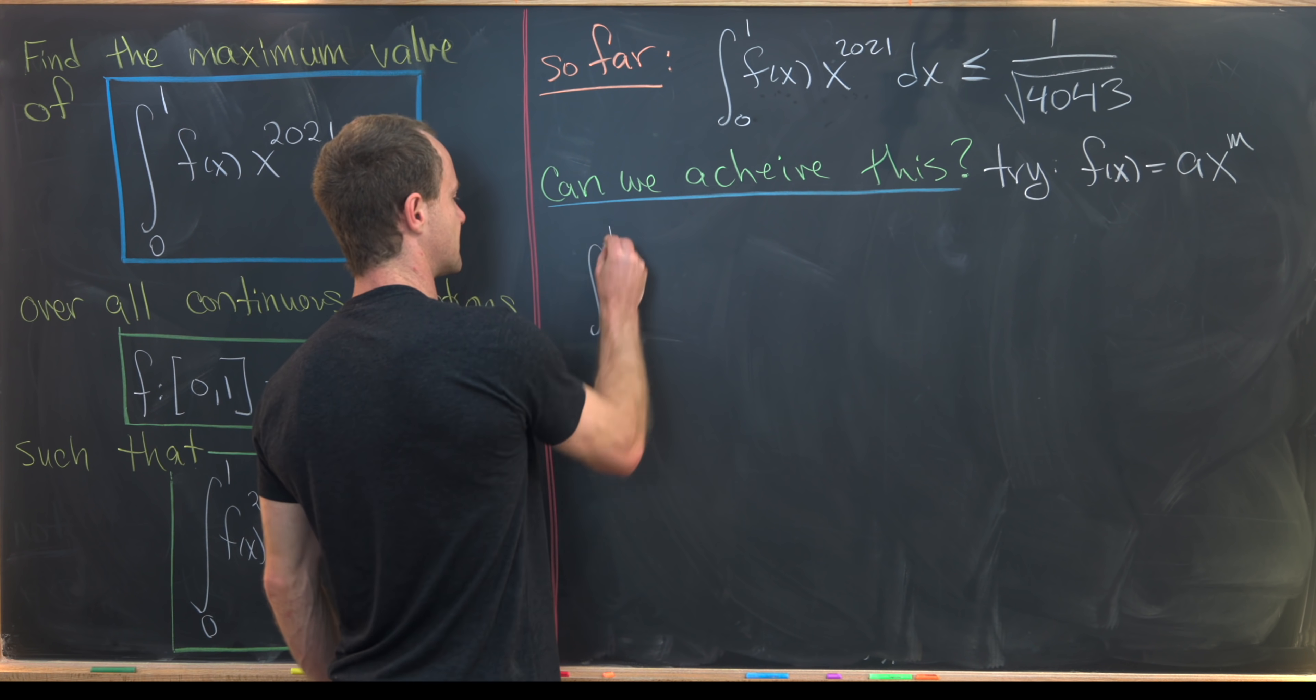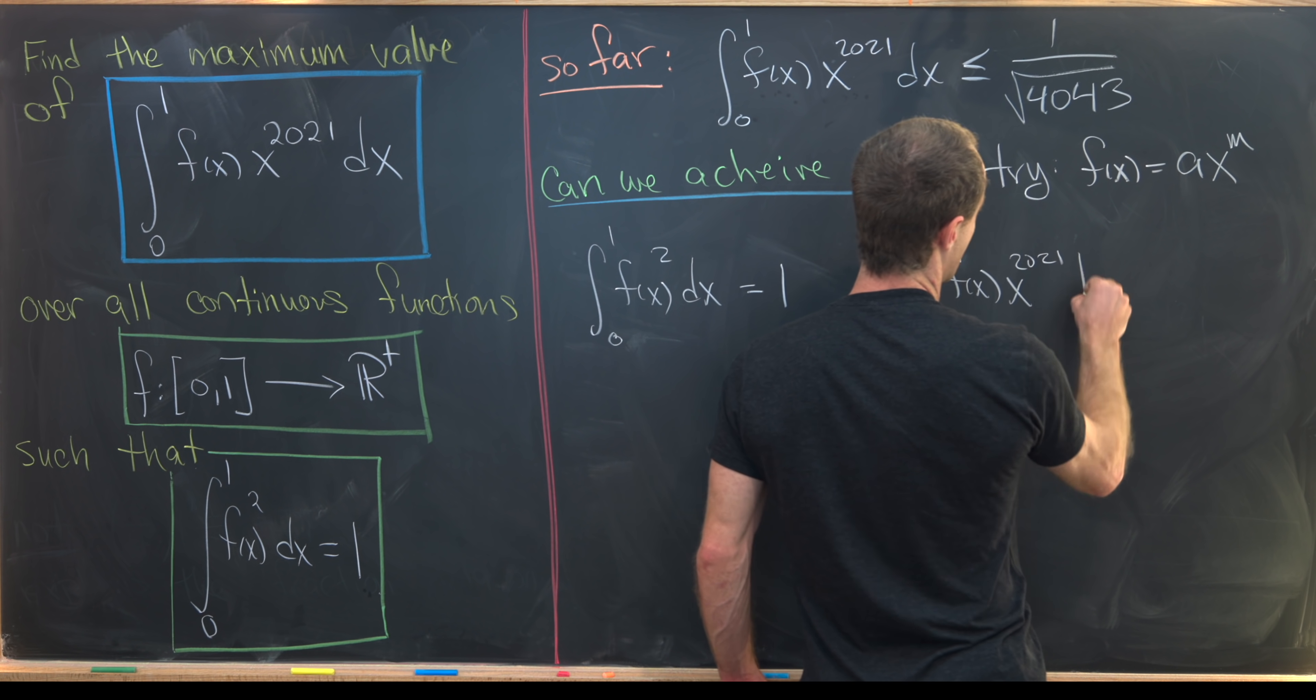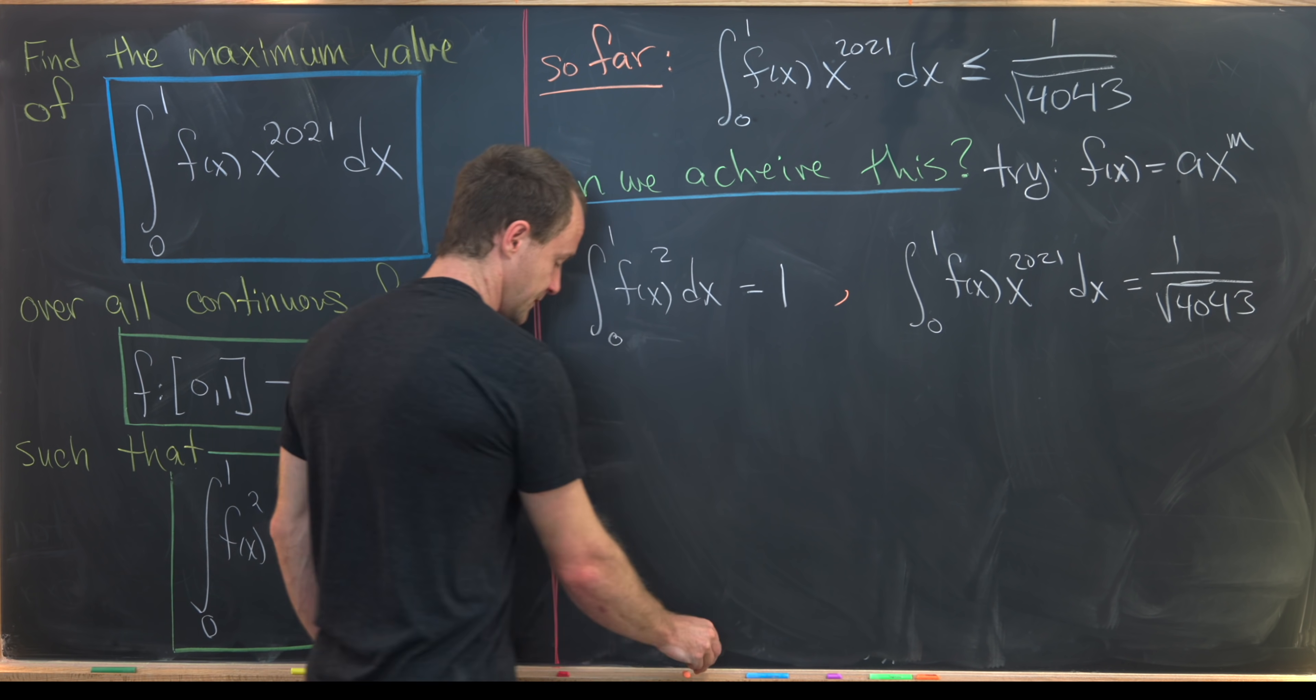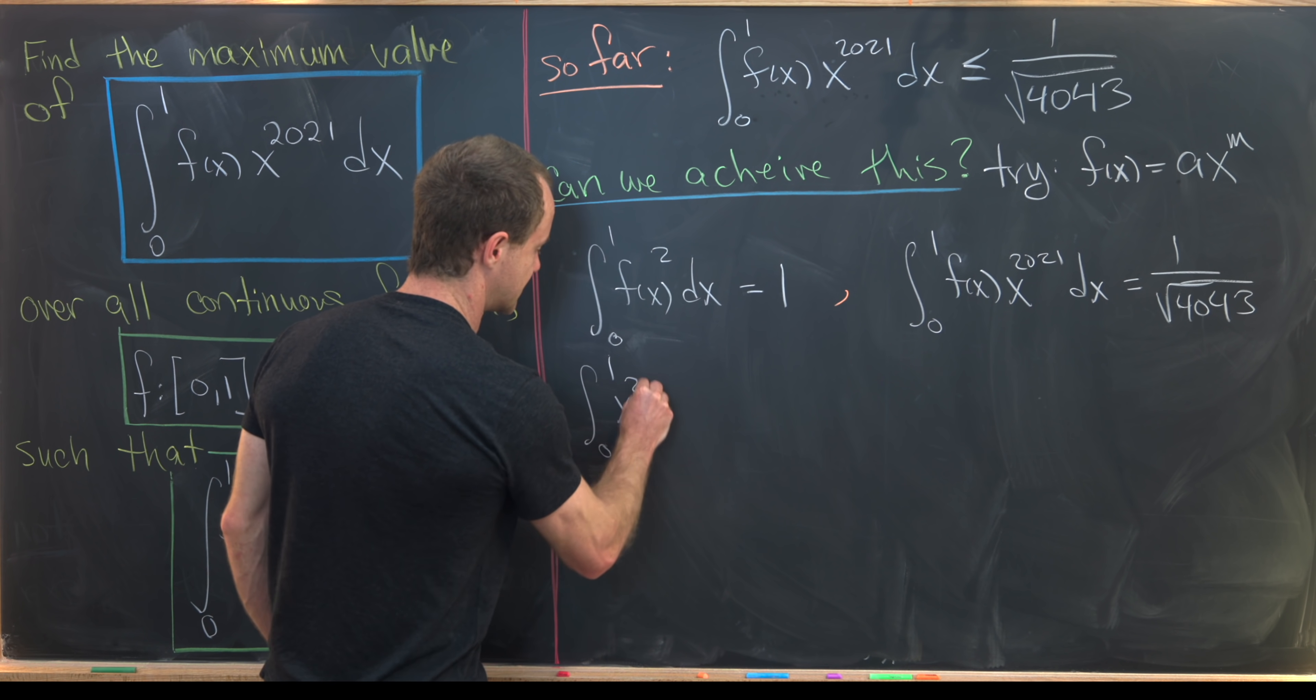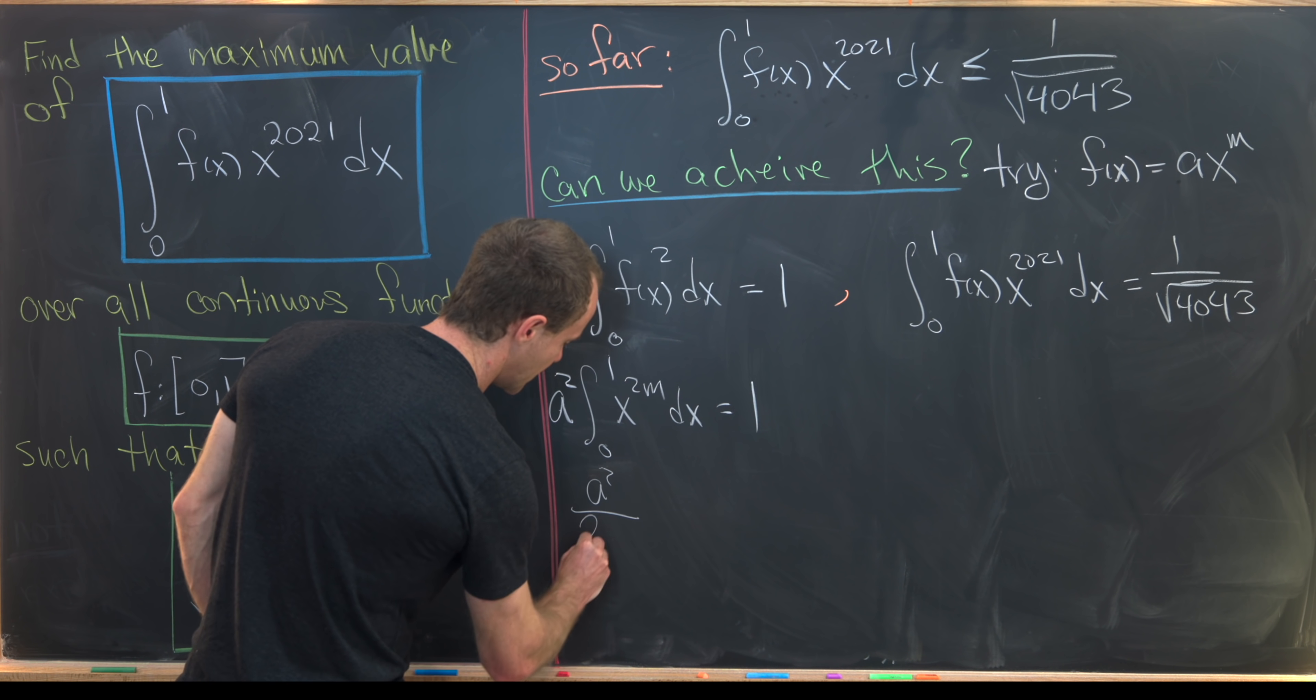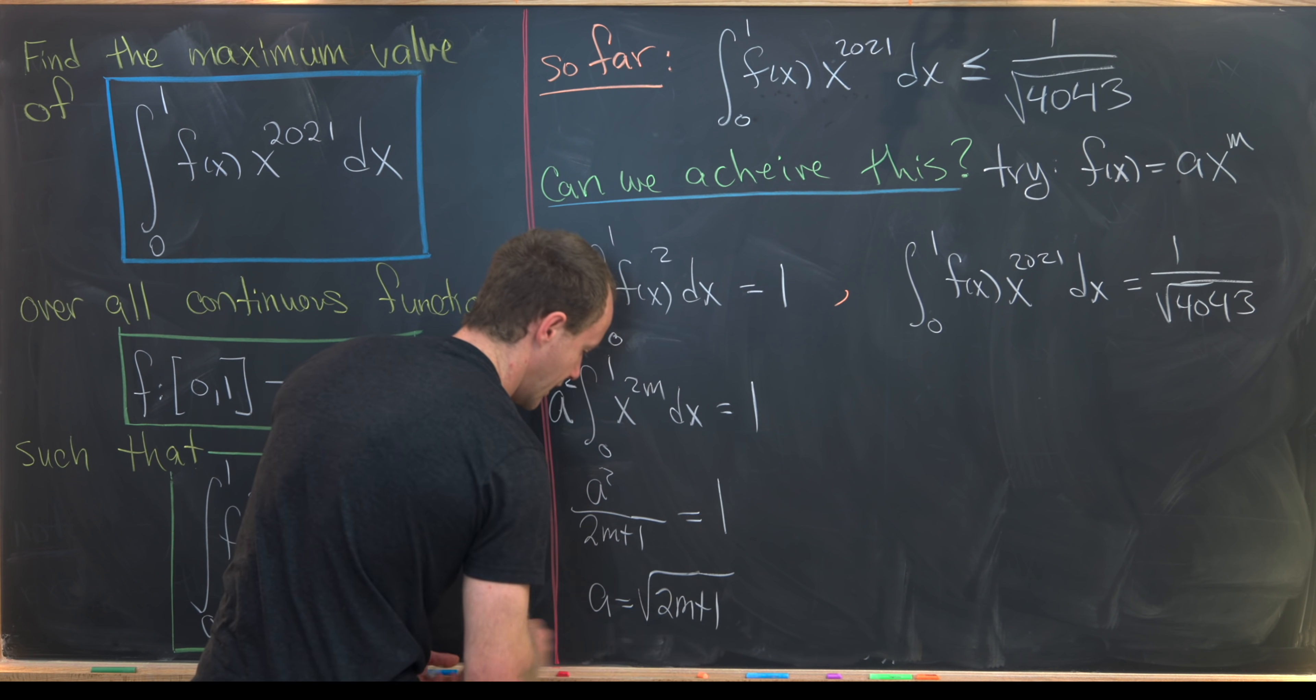Our first equation is the integral from 0 to 1 of f(x) squared dx equals 1. And our second equation is the integral from 0 to 1 of f(x) times x to the 2021 dx equals 1 over the square root of 4043. So hopefully we can tune the values of a and m so that both of these are satisfied. Notice this is the same thing as the integral from 0 to 1 of x to the 2m dx equals 1 with an a squared out front. I can just factor the a squared out front because it's a constant. But then this is easy to integrate. That'll leave us with a squared over 2m plus 1 after doing the standard power rule equals 1. So that means we have a equals the square root of 2m plus 1.